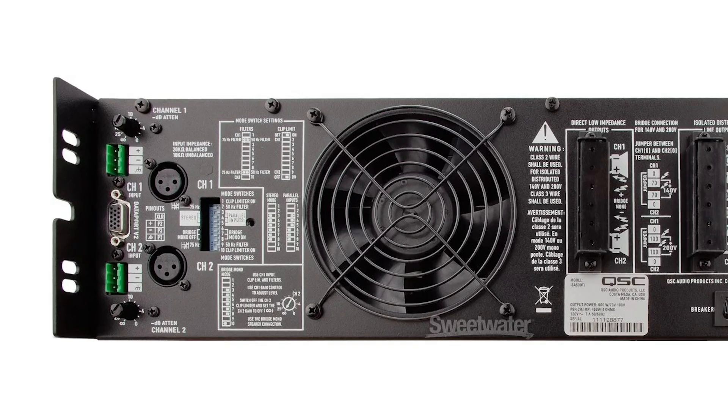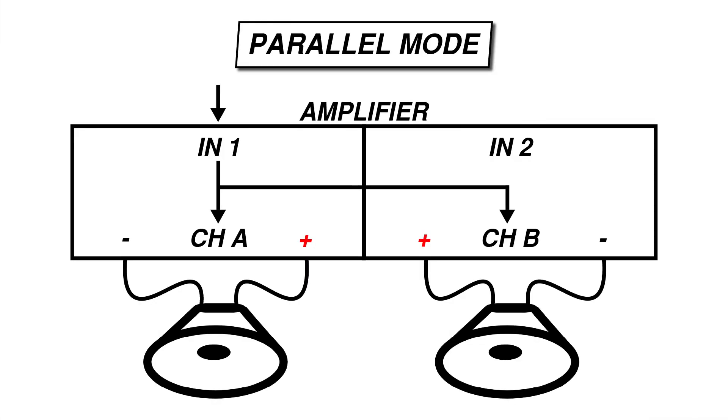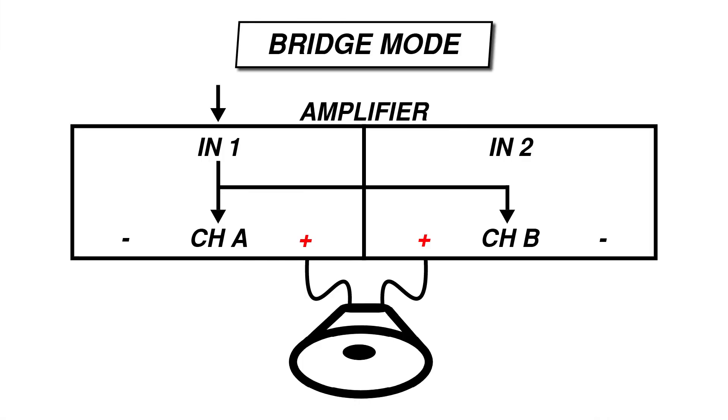While setting up your amp, you might come across switches that allow you to configure the amplifier in different ways. In order to get the best possible performance and to avoid damaging your speakers or your amp, it's really important that you understand what each mode does. In this video, I'm going to teach you the difference between stereo mode, parallel mono mode, and bridge mono mode.